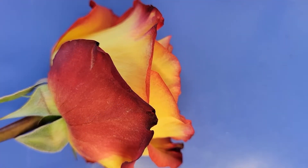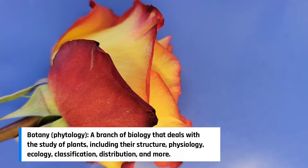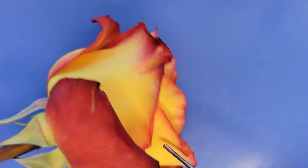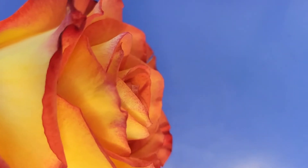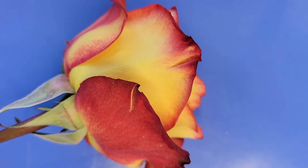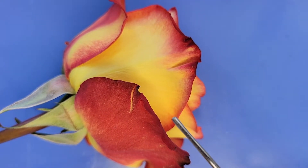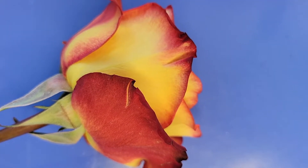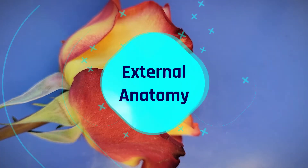Hello everyone and welcome to OWIRM. Today we'll be doing something a little bit different and dive into a new field: botany. That's right, we'll be looking at the anatomy of plants. More specifically, today I have a flower here that we'll dissect. This is a rose which you may have seen before but might not have wondered about their anatomy. It's actually pretty fascinating, and maybe you'll have more to think about the next time you see a rose. So let's dive into the external anatomy.